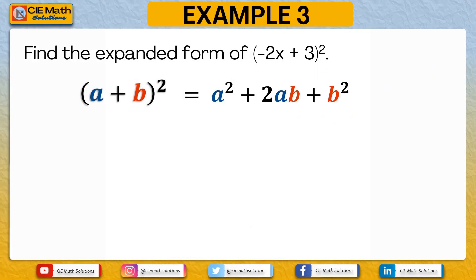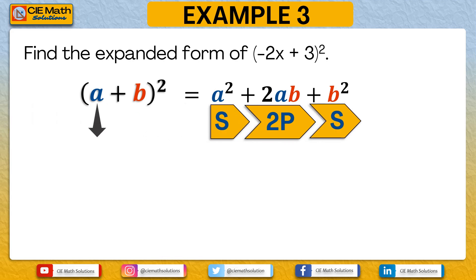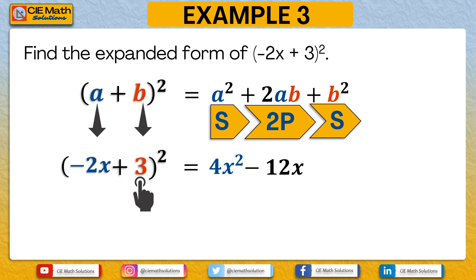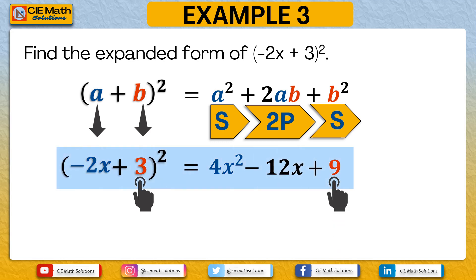Using the faster S-2P-S method, with a equal to negative 2x and b equal to positive 3: S is negative 2x squared, that is negative 2x times negative 2x, giving 4x squared. 2P: negative 2x times 3 is negative 6x, times 2 gives negative 12x. And S: 3 squared equals 9. Therefore, negative 2x plus 3 raised to 2 equals 4x squared minus 12x plus 9.